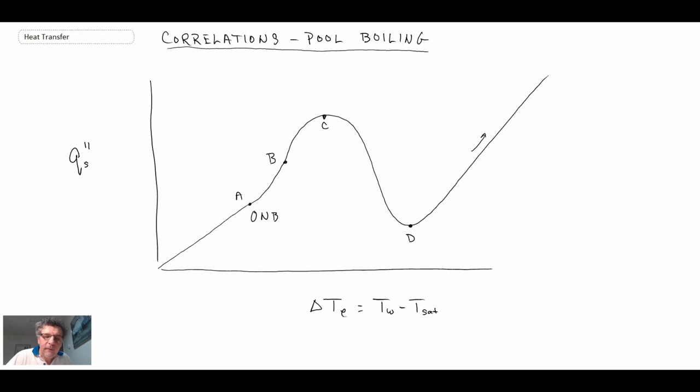Now if we operate down in this region here, this region would be prior to the onset of nucleate boiling. And so the convective heat transfer correlations there would just be simple natural convection. That was covered in other lectures of the course. But that would be natural or free convection.